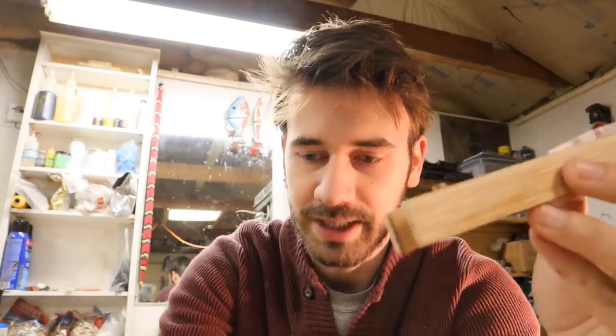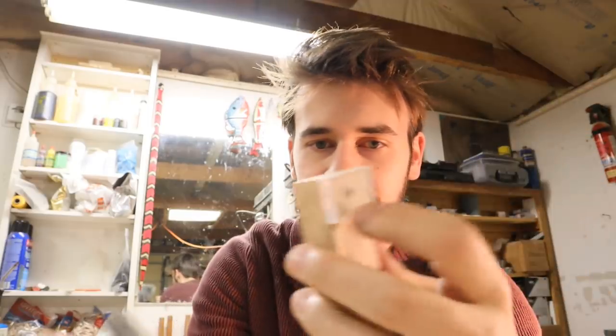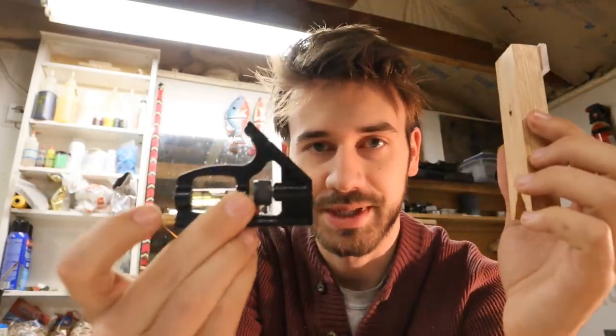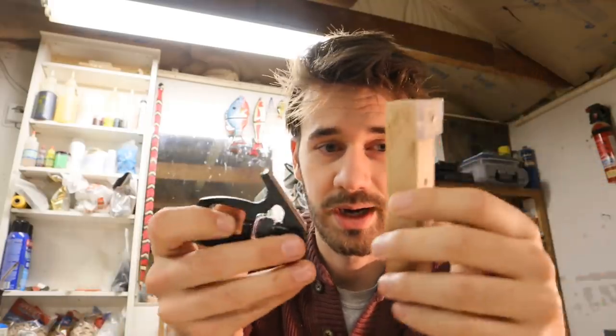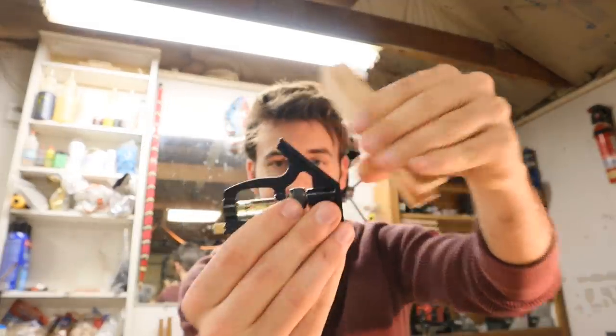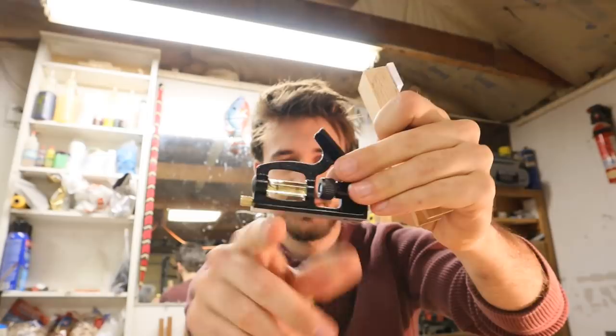I'm making this little jig that's going to hold the wheels so I can cut the teeth on the bandsaw at a 45 degree angle. The last thing I need to do for this jig is to attach this. It came off of a little six inch square. I'm actually just going to glue it because this is a 45 degree angle to this.